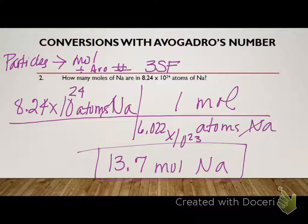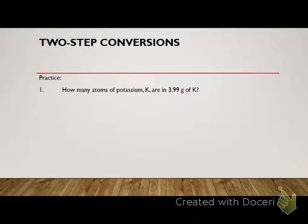Now we're going to put it all together and we're going to do a two-stepper. So who's ready to do the two-step with me? All right. So two-step conversions. You cannot go directly from grams to particles or particles to grams. You have to go through the middleman, or the middle mole, if you will. So we're going to have to go through moles to get there.